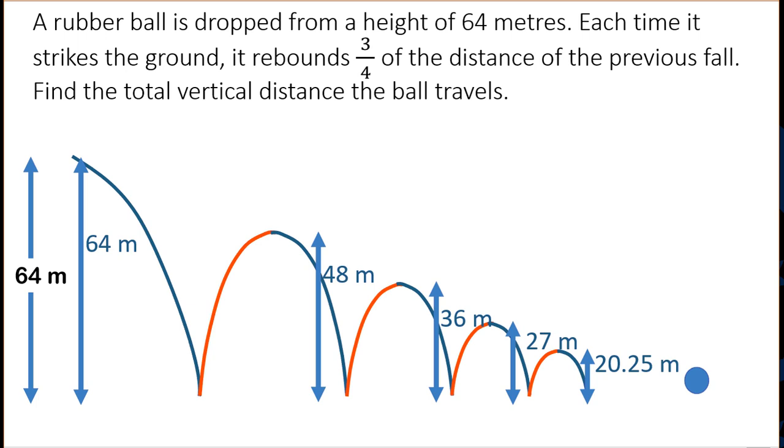48 - the second term divided by the first term is three-quarters. The common ratio there is three-quarters. So that's the downward motion of the ball.